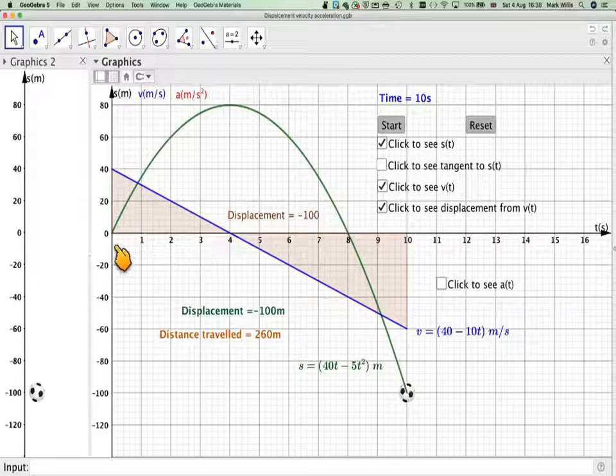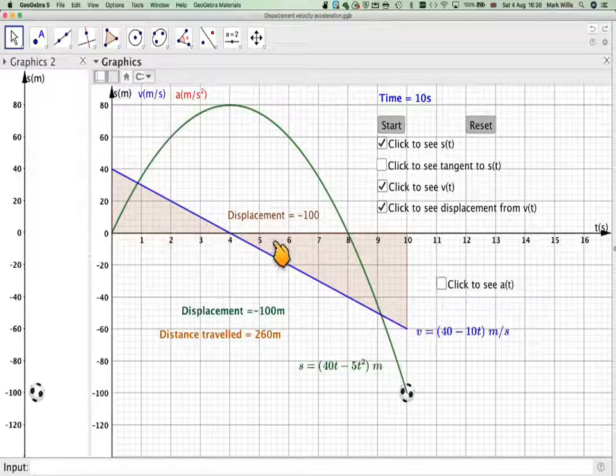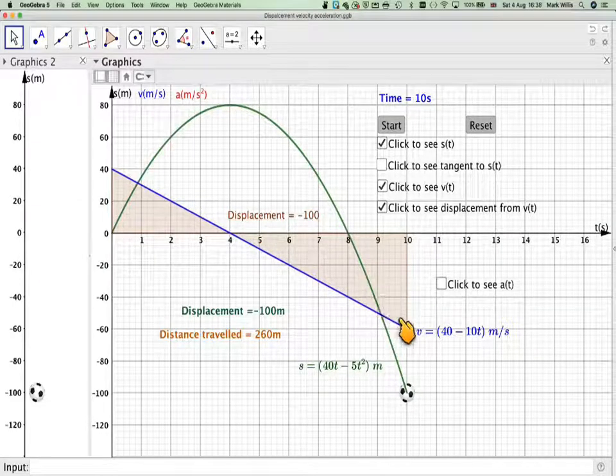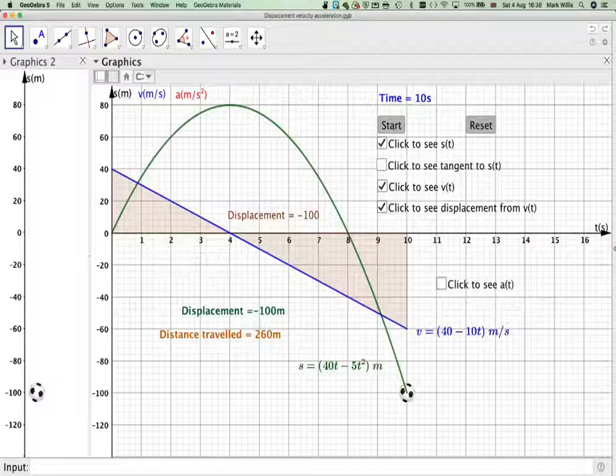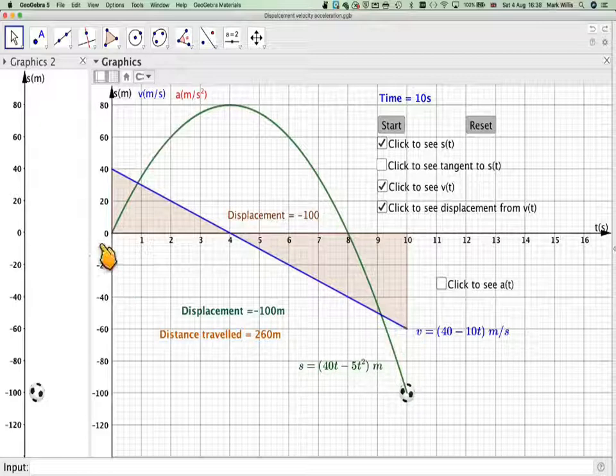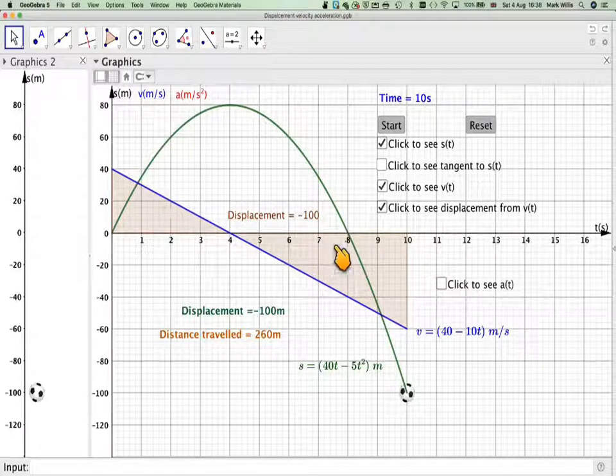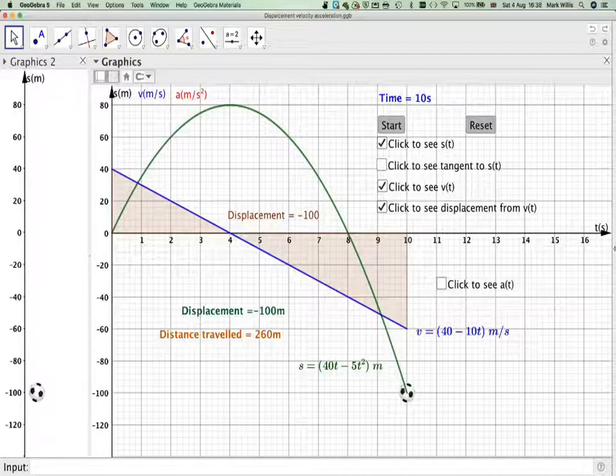So the area underneath the graph and the horizontal axis gives us displacement. We can find the area of this triangle, 4 times 40, divided by 2, 160, divided by 2, is 80. And then here, we're going to have 6 times 60, 360, divided by 2, is 180. And therefore, when you subtract the 2, you will get a displacement of minus 100 metres. So it means it's under the starting point by minus 100. So the area under the velocity time graph will give us the displacement.